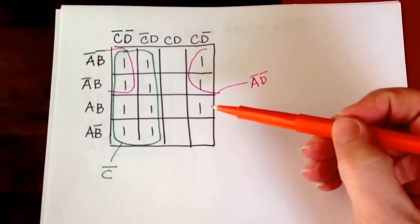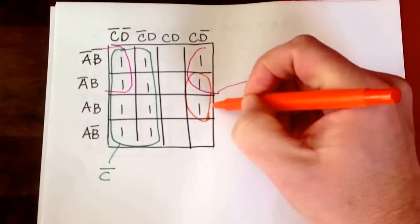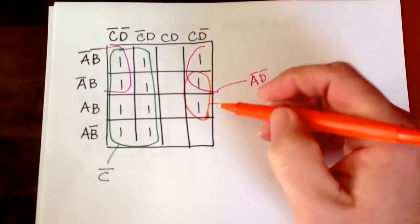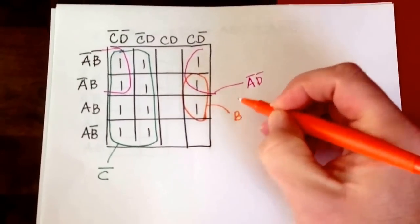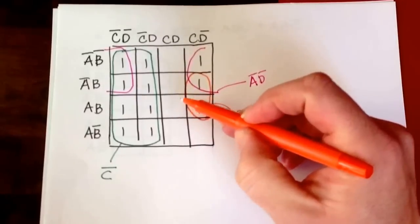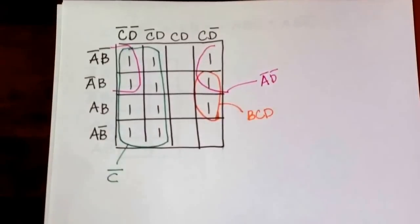Finally, I have one by itself, but so that I can group it, I do want to overlap since there's no other way to get it grouped. For this, from here to here A changes so I get B, and there's no change in columns so I get C and not D.